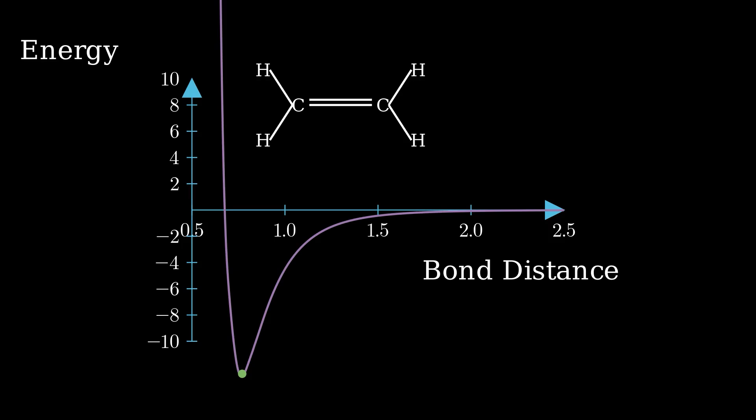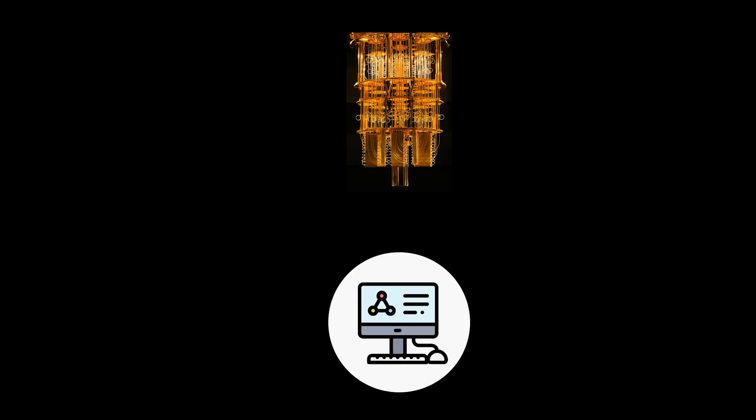Luckily, it turns out that we can outsource that part of the calculation to a quantum computer. One of the algorithms that does this is called the Variational Quantum Eigensolver, or VQE. This is a hybrid algorithm, combining both classical and quantum computers.